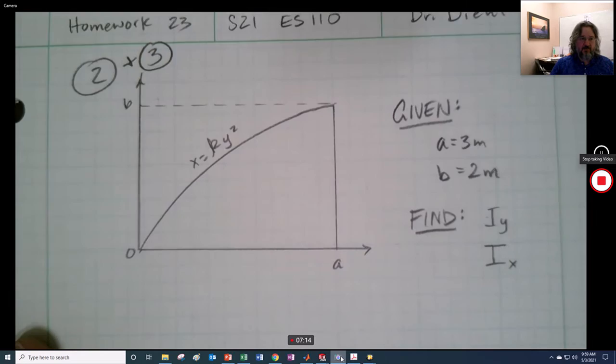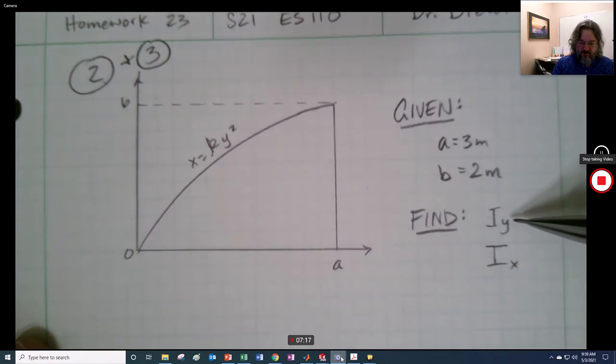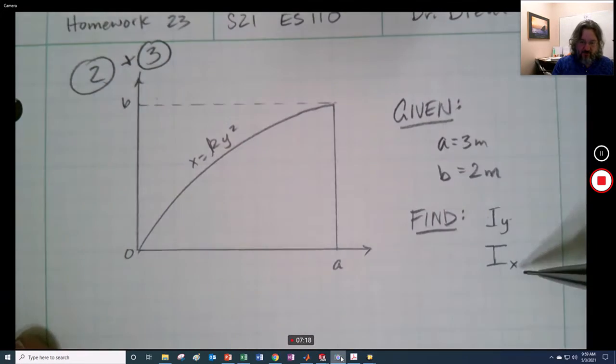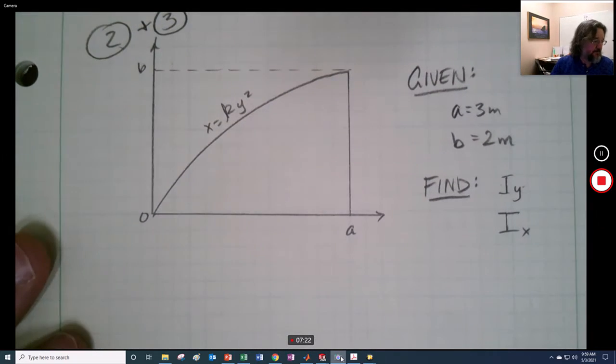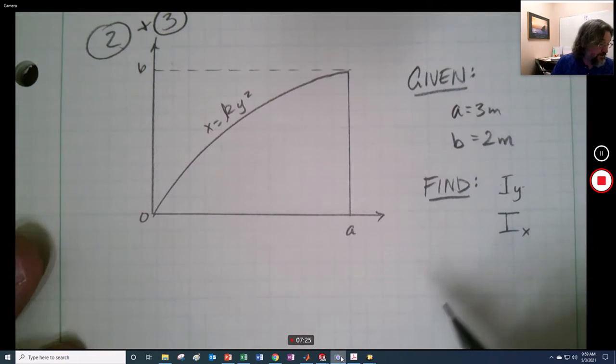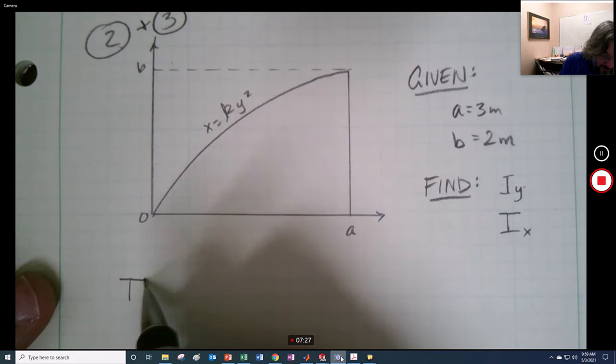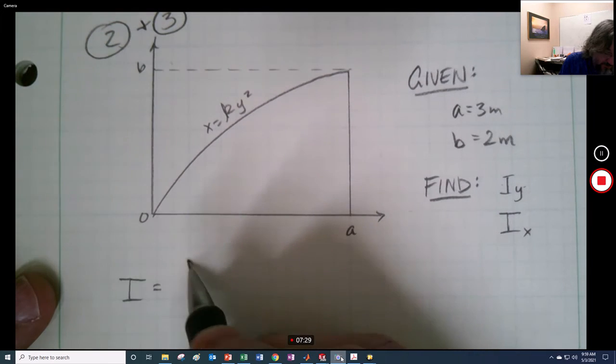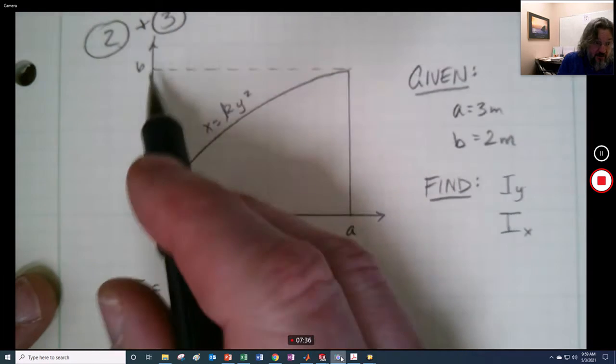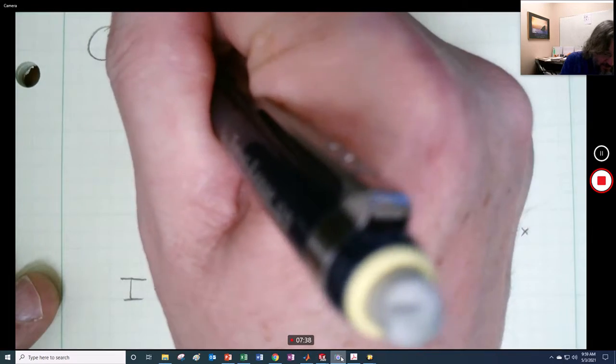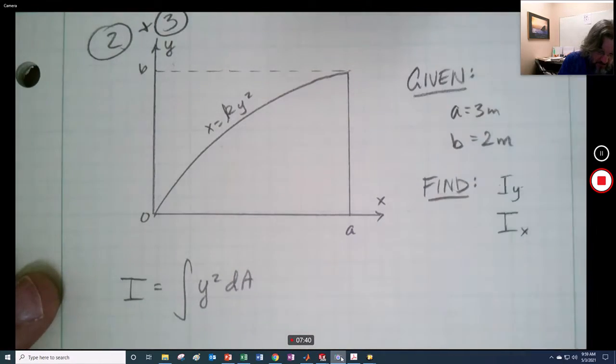Here is the setup. In problem 2 we find Iy, problem 3 we find Ix. So that's not that big of a deal. We'll start out with I equals integral y squared dA. We're trying to find it about the y axis, which I didn't label. There you go.